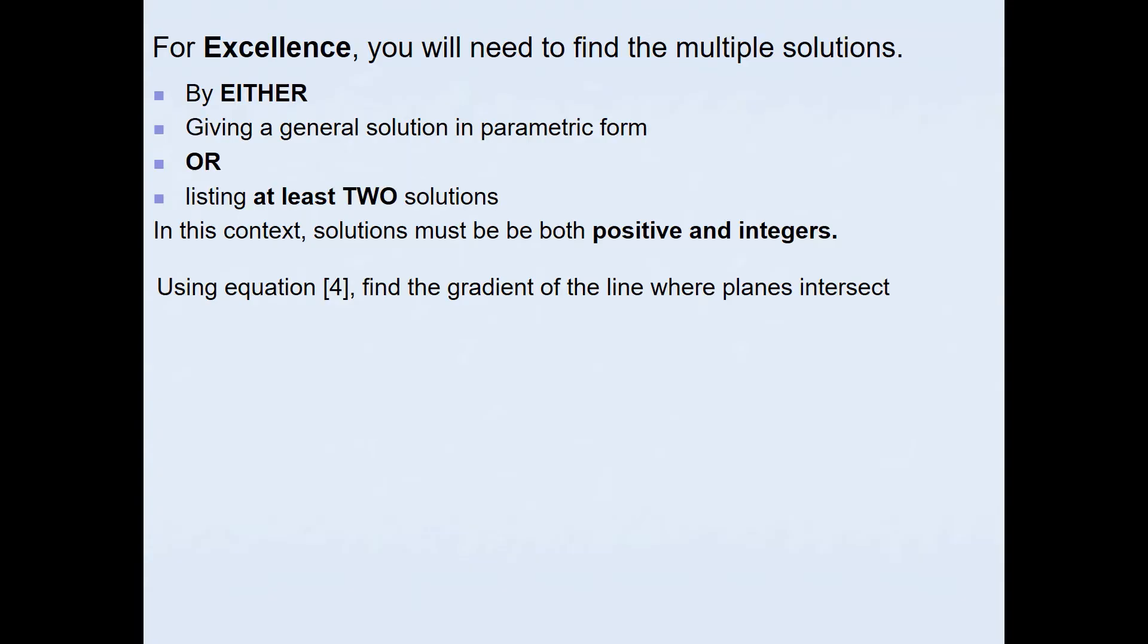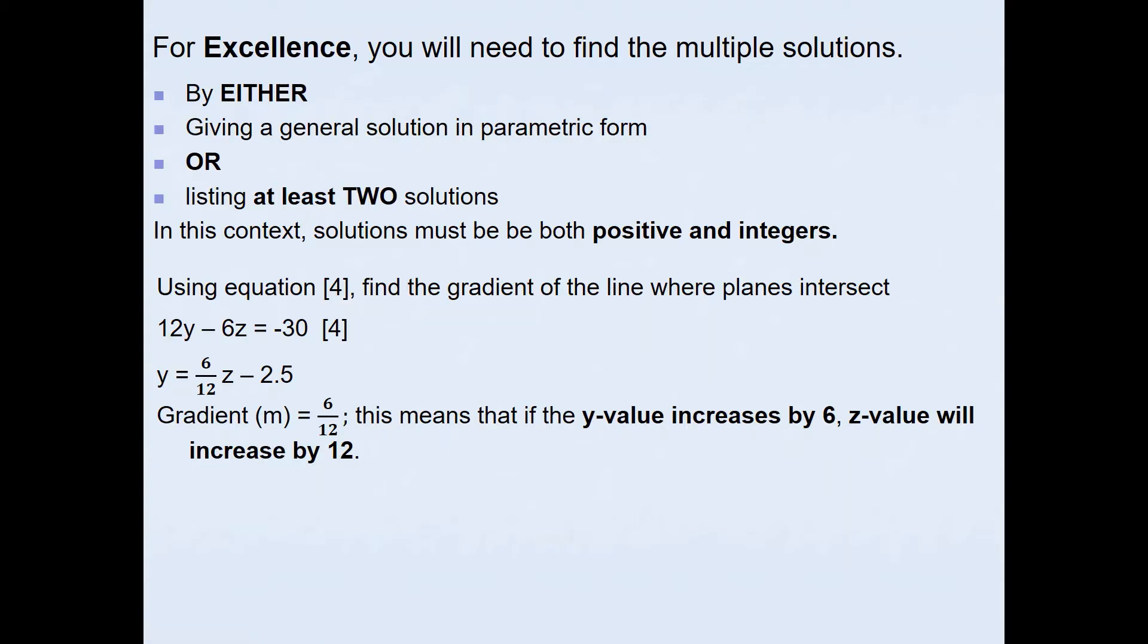Using equation 4, we can find the gradient of the line where the planes intersected. Equation 4 was 12Y - 6Z = -30. If I rearrange this into Y = MX + C form, I get Y = (6/12)Z - 2.5. The Y intercept is -2.5 and 6/12, which simplifies to 1/2, is the gradient value of the line where the planes intersected. The gradient tells us that if the Y value increases by 6, then the Z value will increase by 12. This is the change in Y and change in Z, because the horizontal variable is Z in this case.